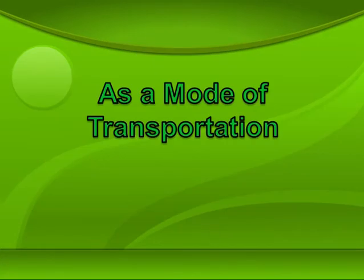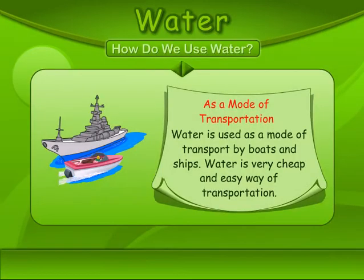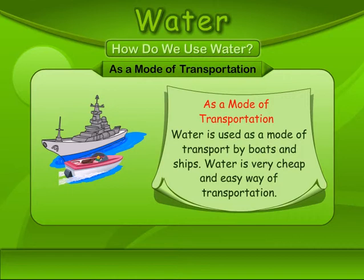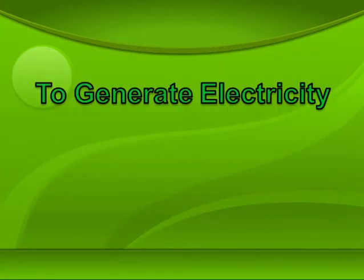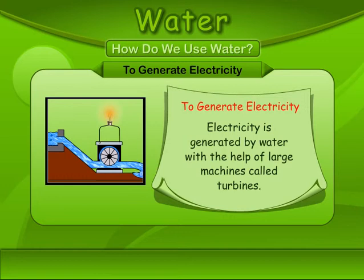As a mode of transportation, water is used by boats and ships. Water is a very cheap and easy way of transportation. To generate electricity, electricity is generated by water with the help of large machines called turbines.